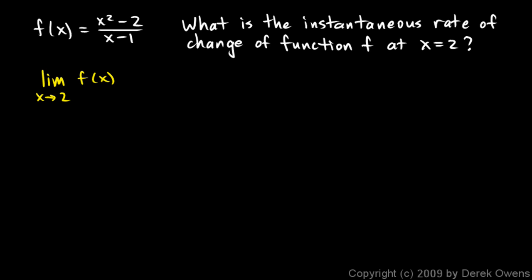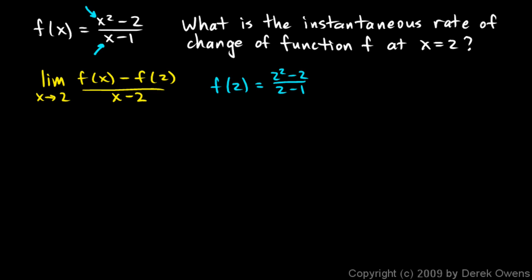Don't put x minus 1 in the denominator of the difference quotient — the function itself has x minus 1 in it, but we're finding the rate of change at x equals 2, so the denominator is x minus 2. f of 2 is (2 squared minus 2) over (2 minus 1), which is 2 over 1, so f of 2 equals 2.